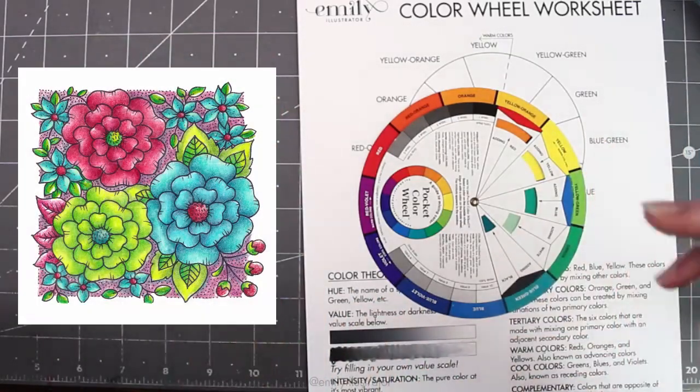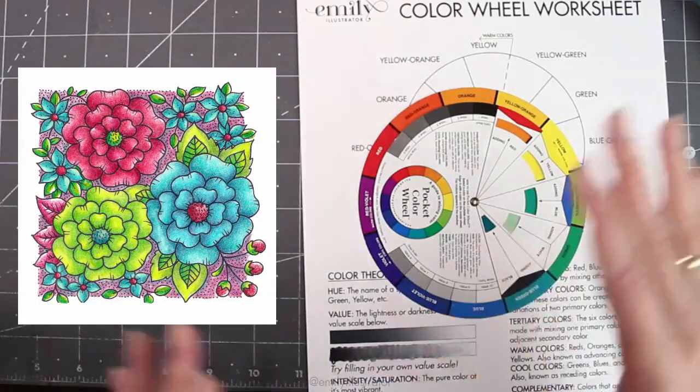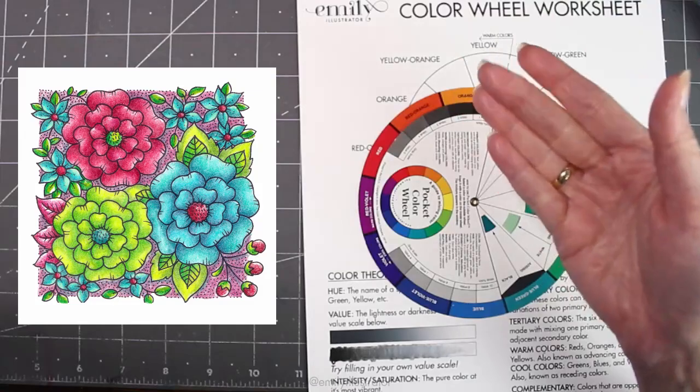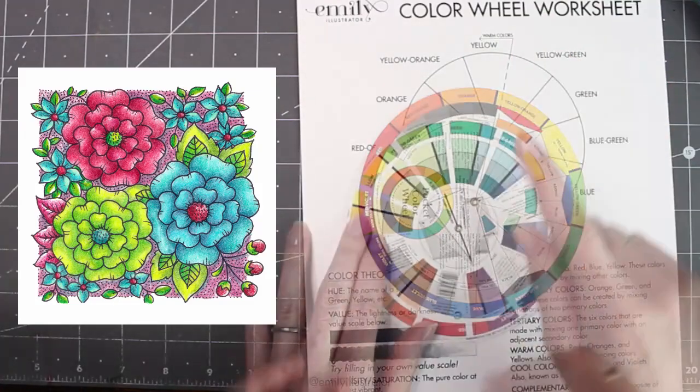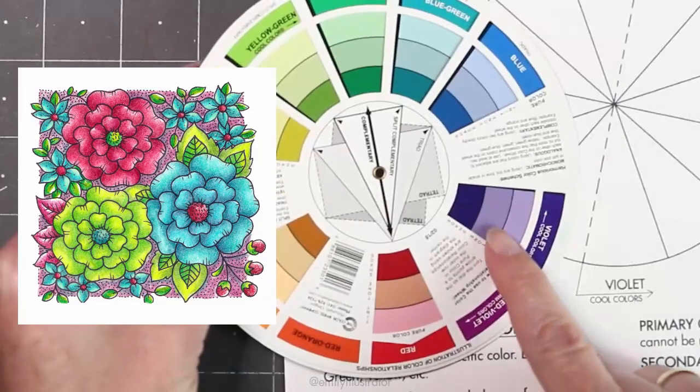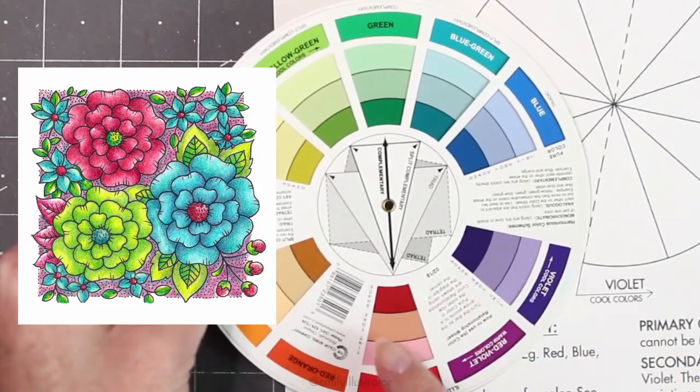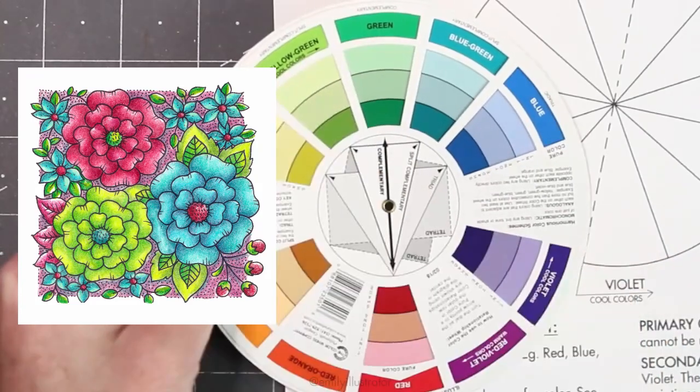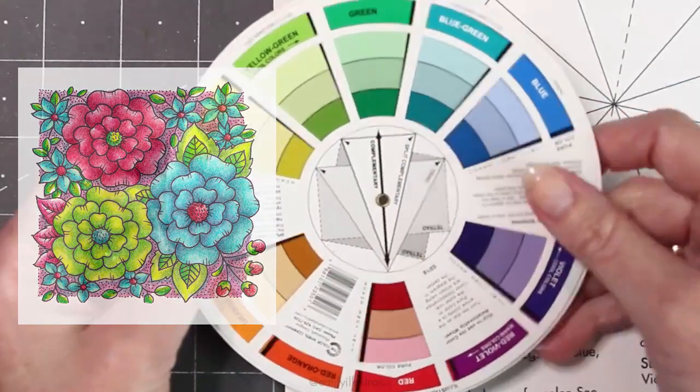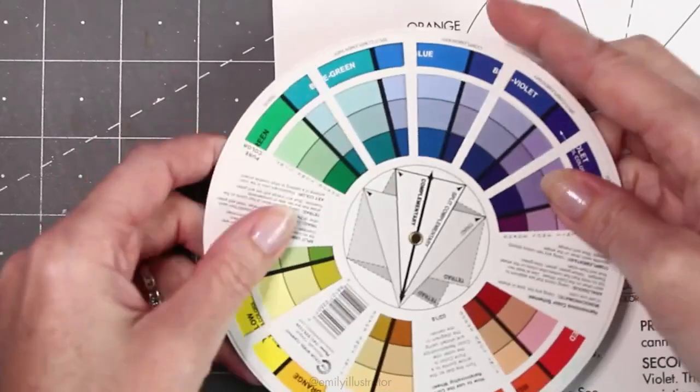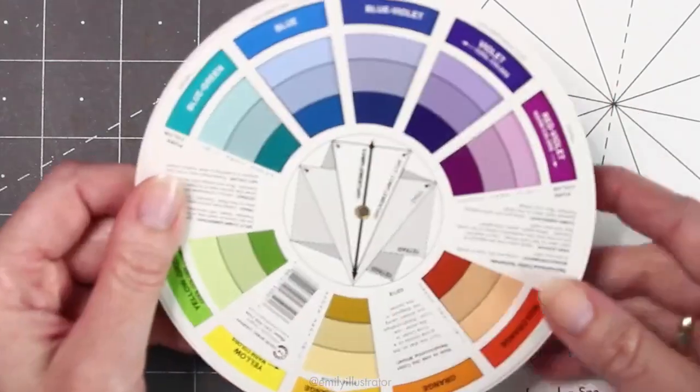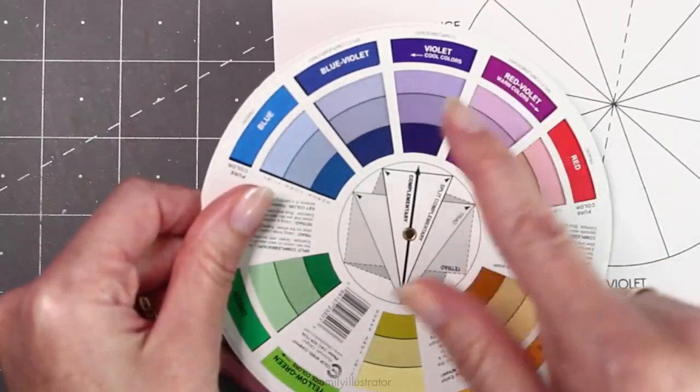Something similar to this is a term called split complementary which uses any color with two colors on either side of its complementary color. In this example I've used red, blue green, and yellow green. On the back of these color wheels you have these triangles and shapes but there's also labels. So you can see here for the image that I just mentioned there's the red, the blue green, and the yellow green. This one is right here where it says split complementary. So you can turn this in any direction to choose your new combination of split complementary colors. So here we have yellow orange, blue, and violet. Turn it one more and we've got yellow, red violet and blue violet.